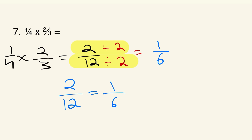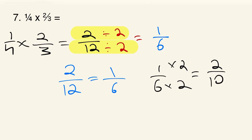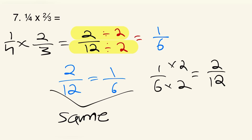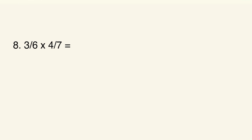To verify: if you multiply both numerator and denominator of one sixth by two, you get two over twelve — confirming they are equivalent. We simplify to get a reduced form with smaller numbers to work with. The next example is three sixths times four sevenths. Multiplying across gives us twelve over 42.